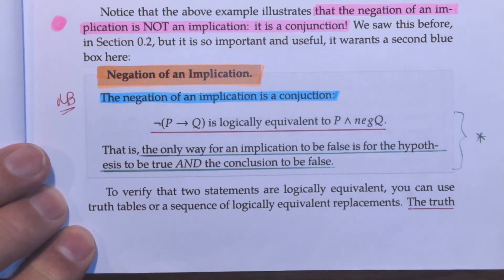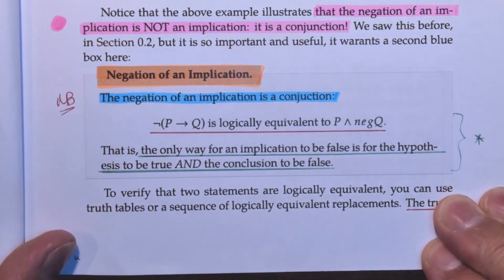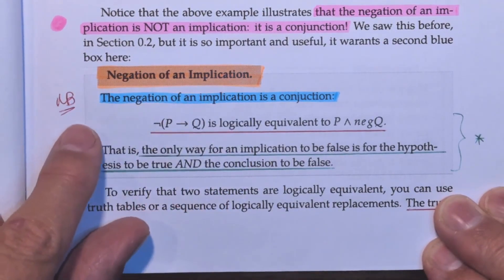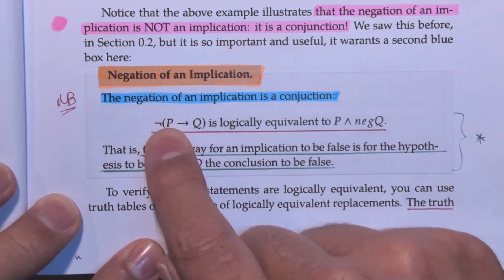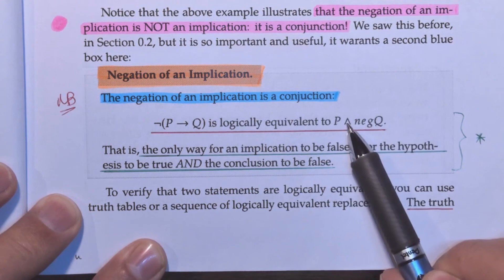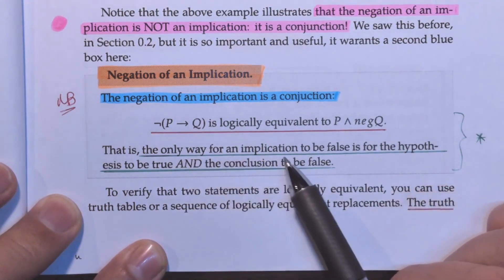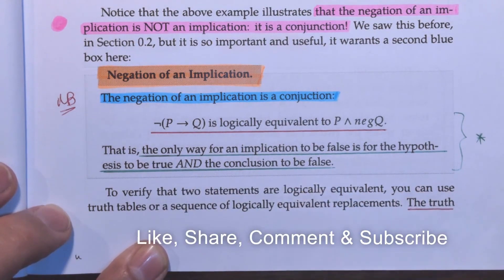What did this example just show us? We notice that the negation of an implication is not an implication. It is a conjunction. We saw this before in chapter 0. So, let's have a look again. A negation of an implication. The negation of an implication is a conjunction. So, the negation of if P then Q is logically equivalent to P AND the negation of Q. So, P and not Q. That is the only way for an implication to be false is for the hypothesis to be true and for the conclusion to be false. We will look at an example that shows us this quite nicely.